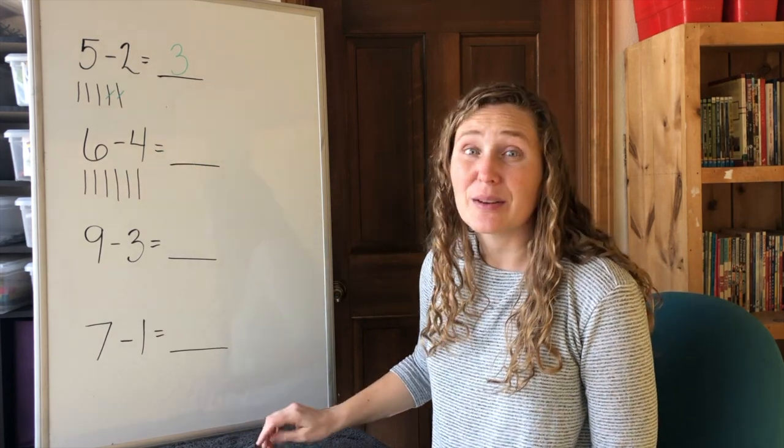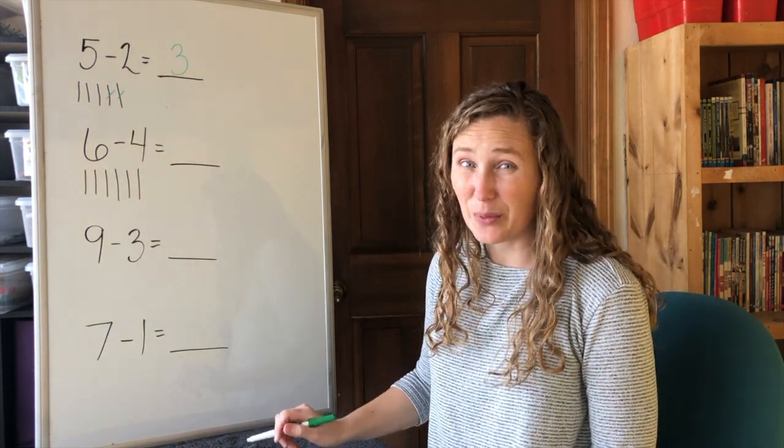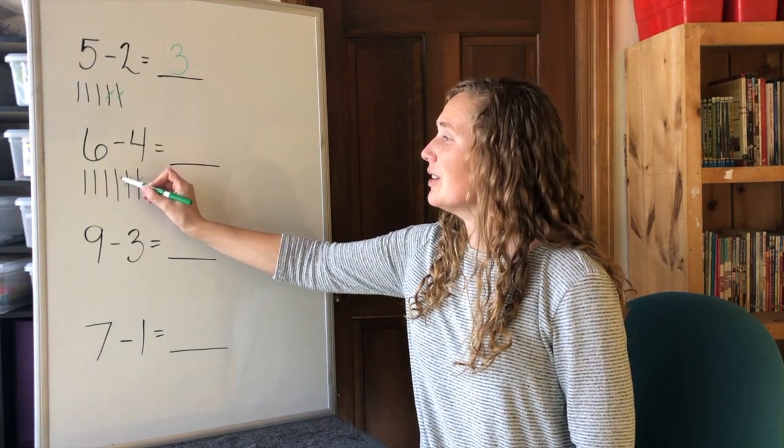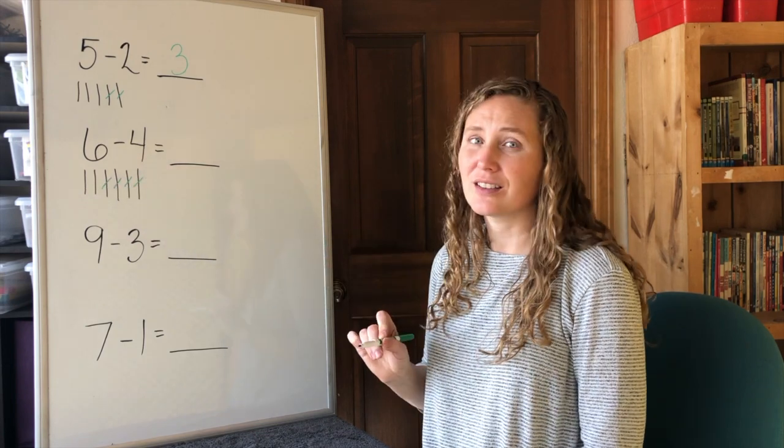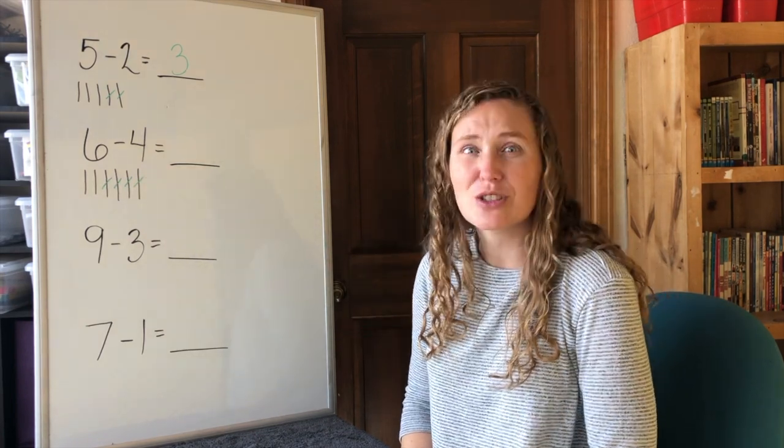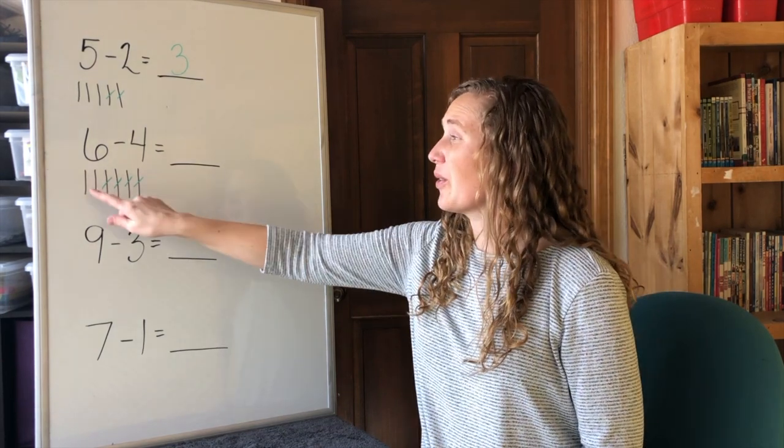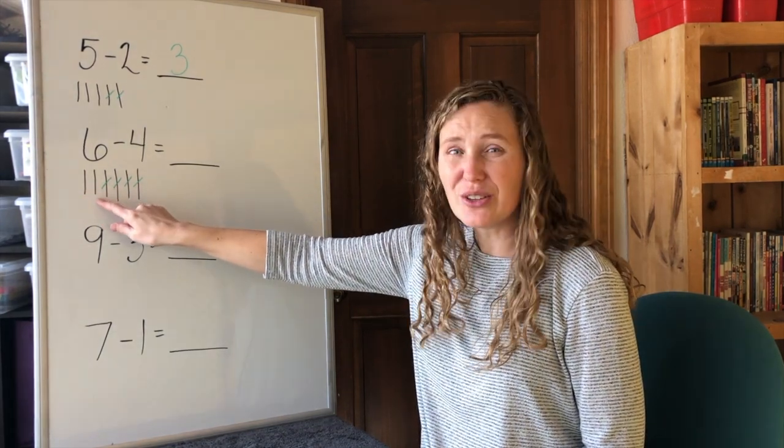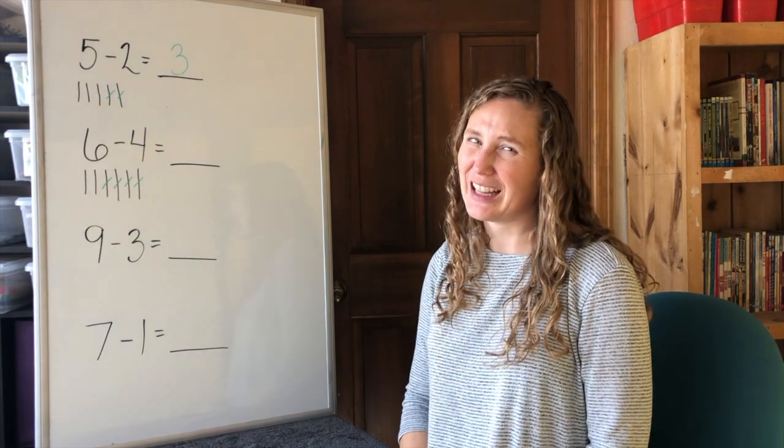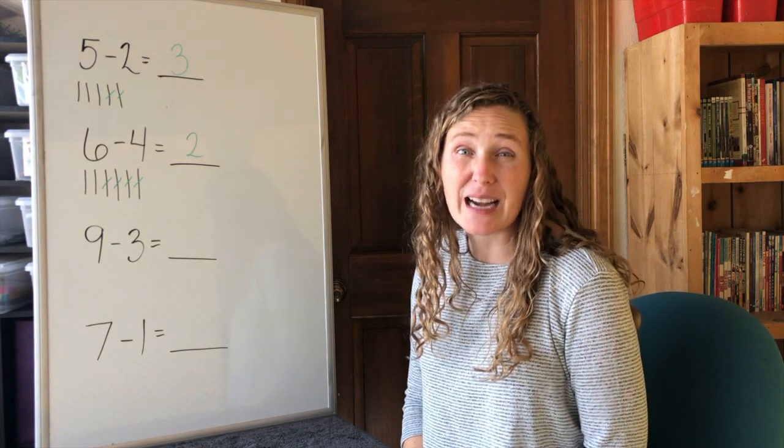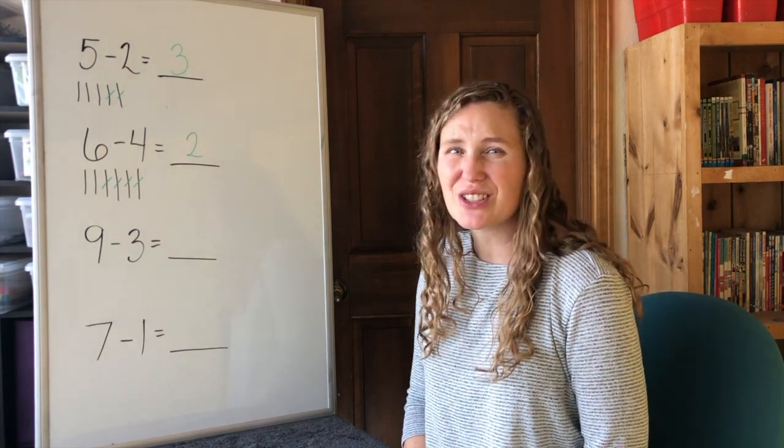Then we minus, take away four of them. One, two, three, four. How many tally marks do we have left? Yes. One, two. We have two tally marks left. Two. Six minus four equals two.